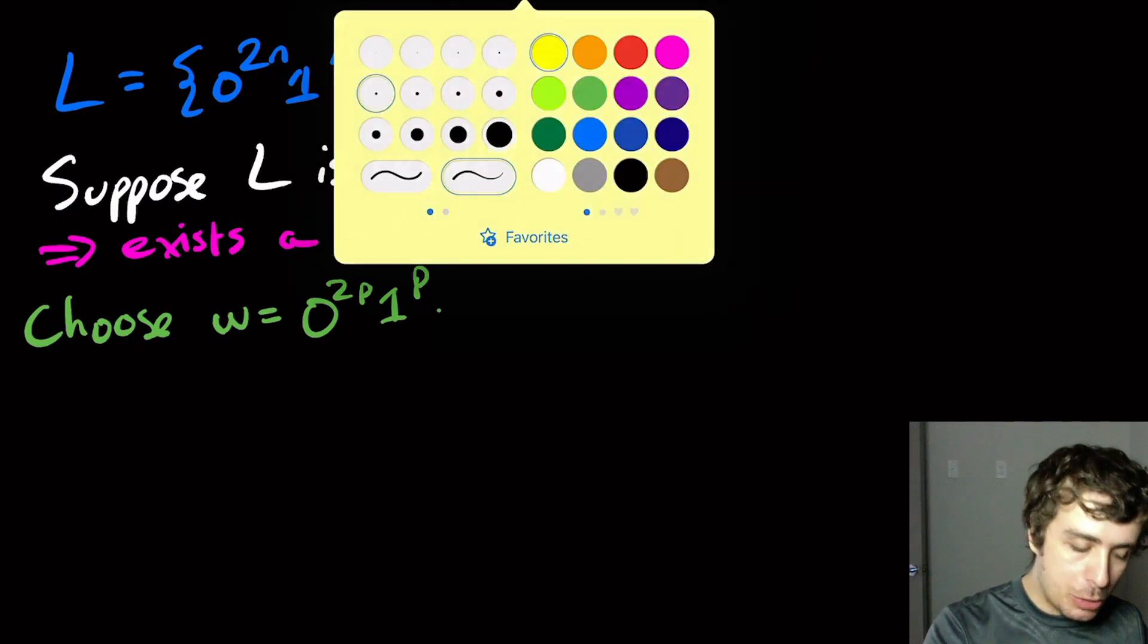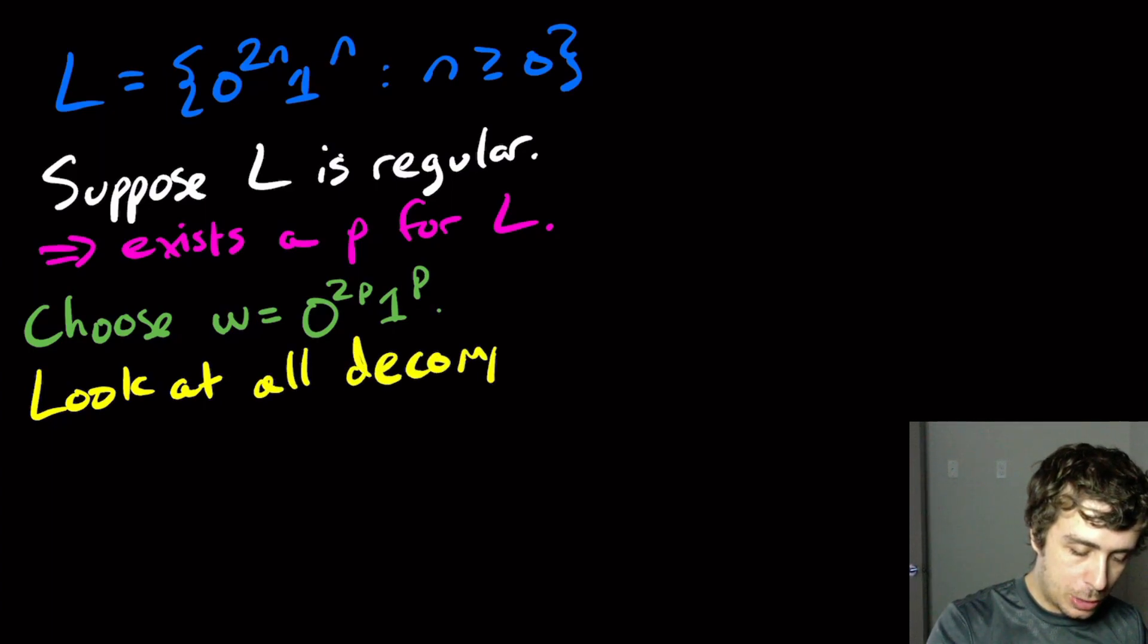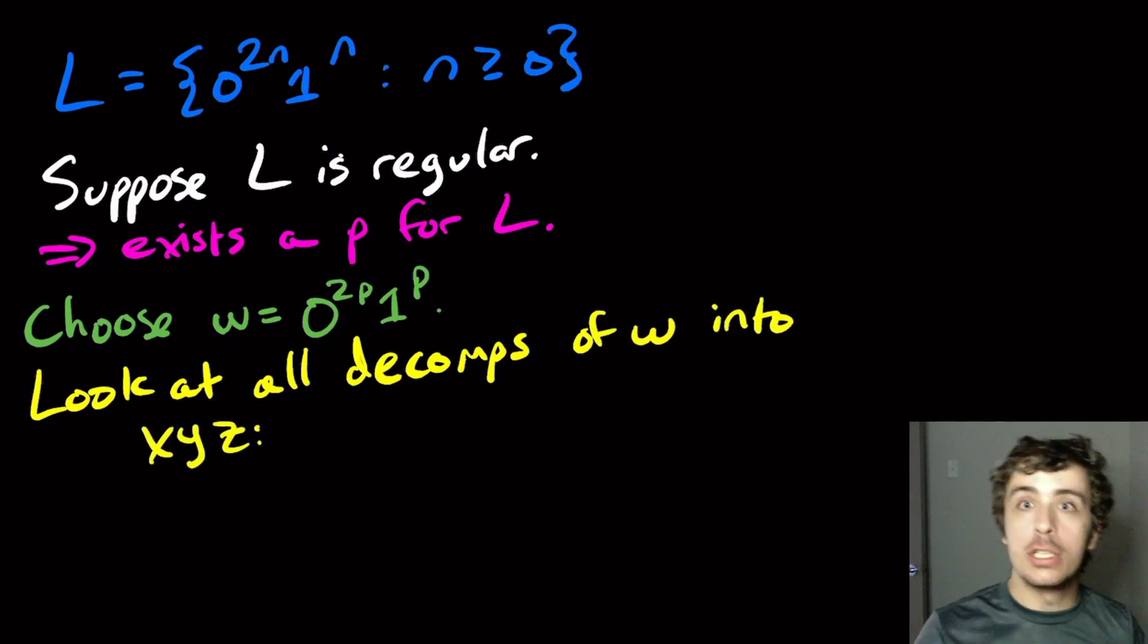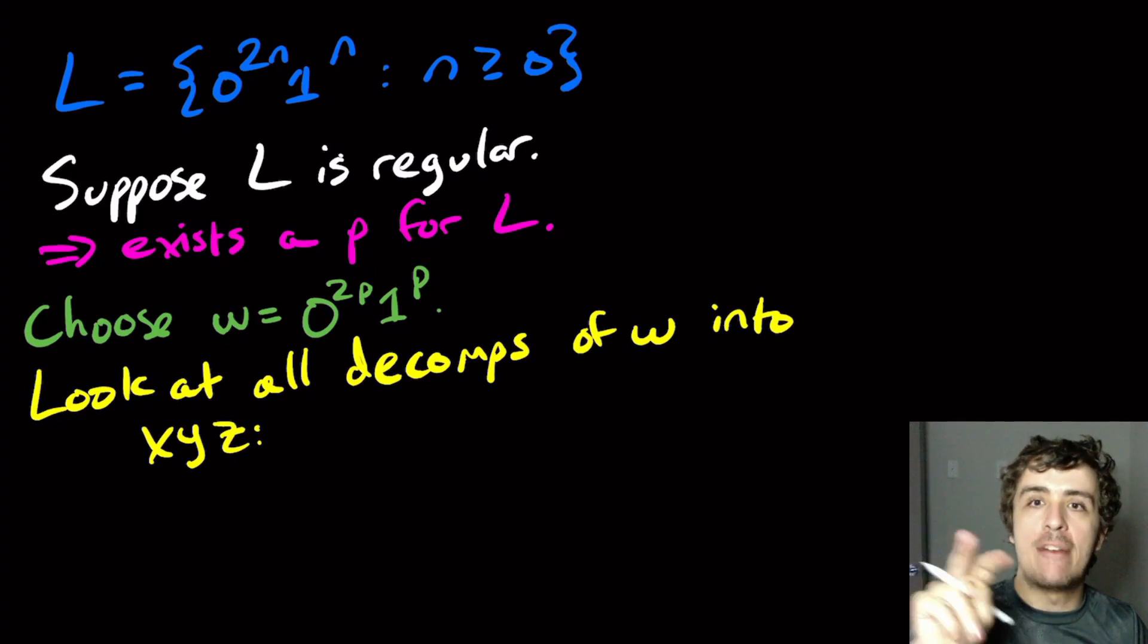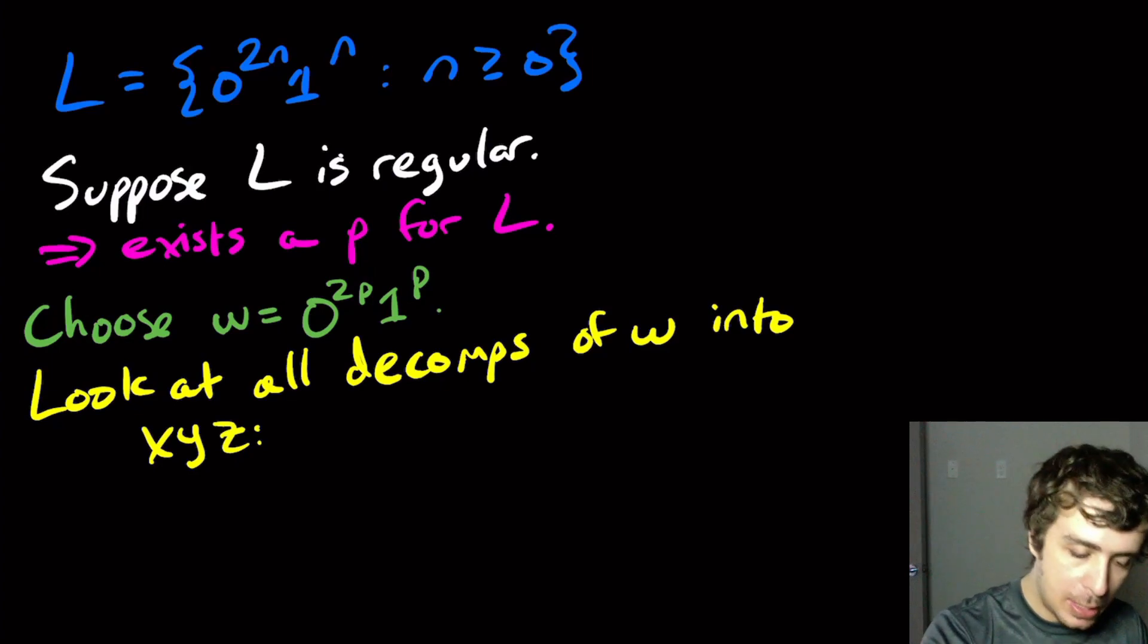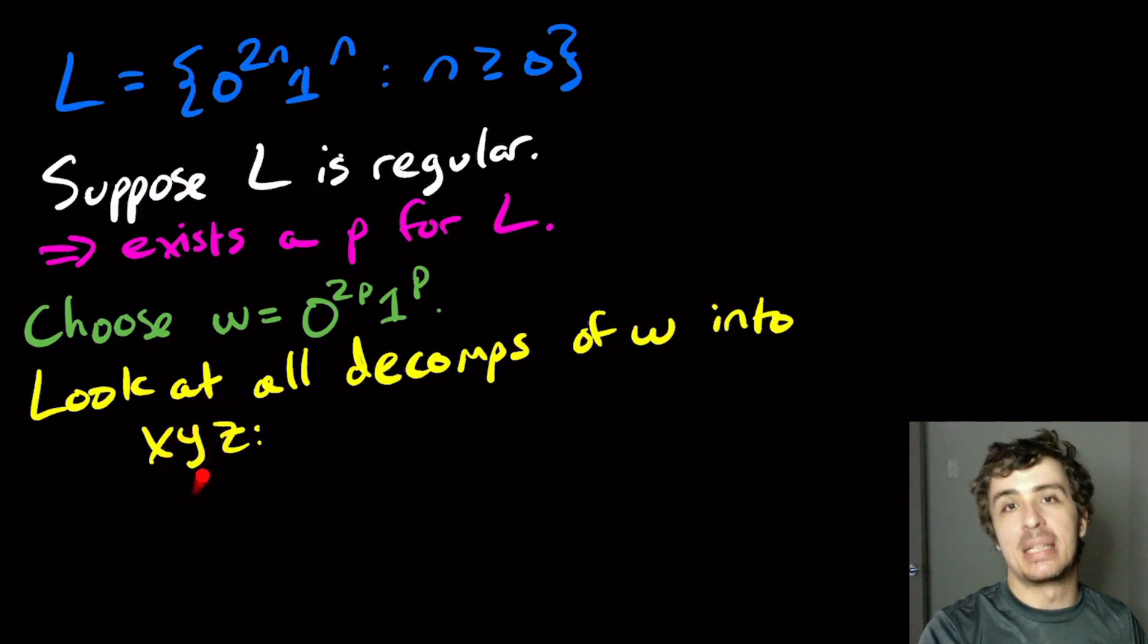So now what we need to do is to look at all decompositions. I'm just going to shorthand the word of w into x, y, and z according to the two rules, which are that x and y together have at most p characters. So the first two bits have at most p characters, and the y bit is non-empty. So it has at least one character.